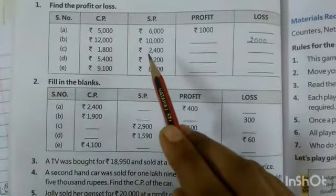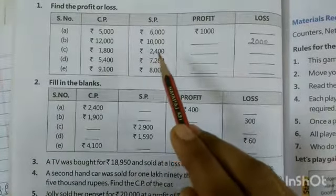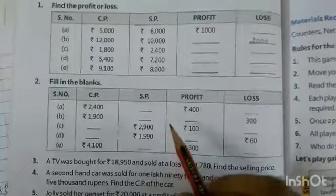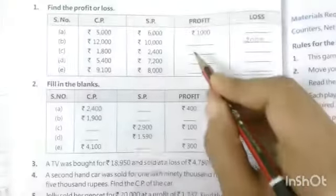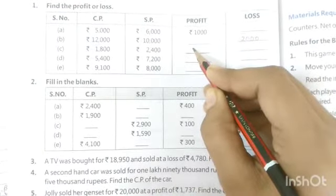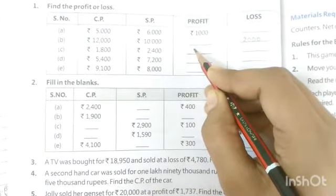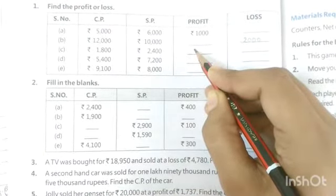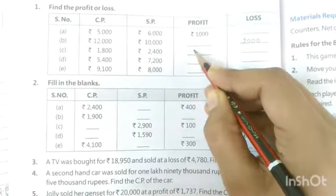Cost price is 1,800 and sell price is 2,400. So the profit is 600.